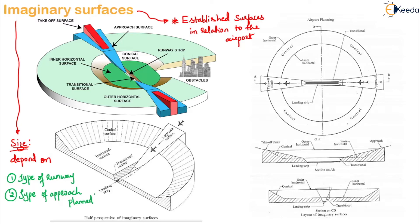There are five types of imaginary surfaces as we have seen before. Here you can see a three-dimensional figure. The first one is the approach surface — this portion is the approach surface. Next is your conical surface. Then the third one is your horizontal surface, and there are two horizontal surfaces: an inner horizontal surface and an outer horizontal surface.